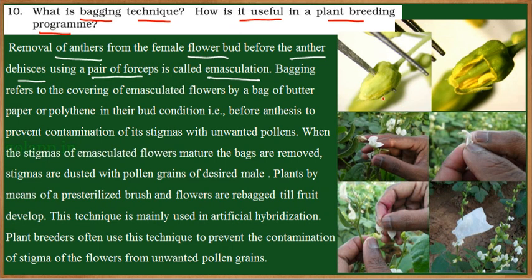Here we can see a flower in the early stage — it is not yet bloomed, it is in the bud condition. Inside this bud, the androecium and gynoecium are present but immature. At this particular stage, using forceps, the bud is cut open and the anthers are removed from bisexual flowers, so that only the gynoecium remains and the male gametes are removed.